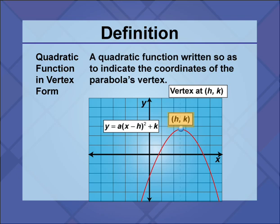Those values can be used to write the equation y equals a times the quantity x minus h squared plus k, where the values of h and k are based on the coordinates of the vertex. The value a determines the width and orientation of the parabola.